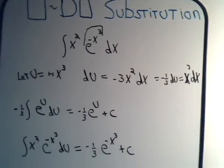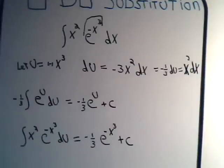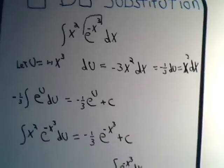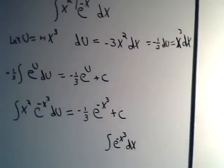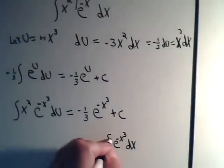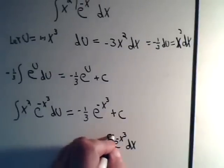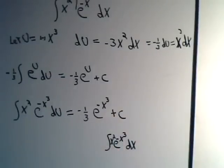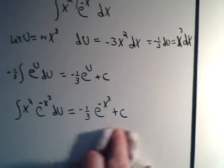The integral equals minus one-third e to the U, which is minus x cubed plus a constant, and that would be it. So you see, really the integral was all set up for us. If we had just this integral, like this, that we would not be able to solve, but by putting the x squared in there, then it's all set up for a U-D-U substitution.